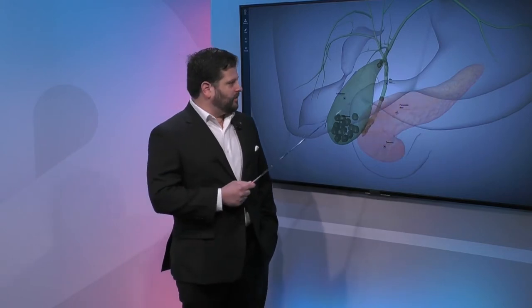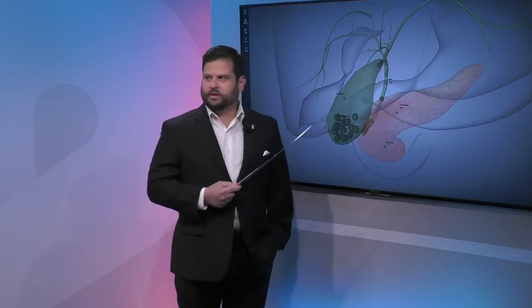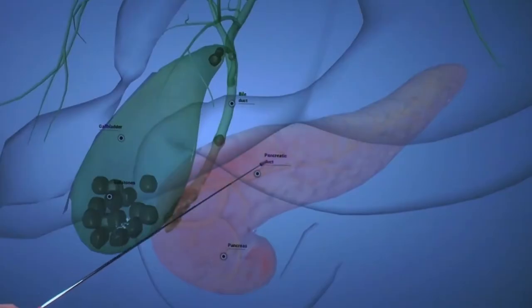But specifically for gallbladder pathology, the problem is that the pancreas drains through the pancreatic duct here into the common bile duct. But if the common bile duct is obstructed, there's also obstruction and backflow of these pancreatic enzymes.